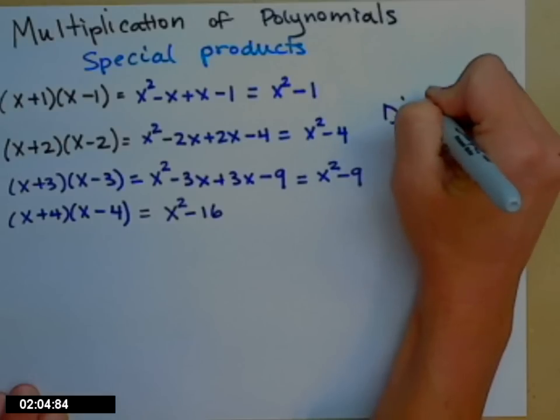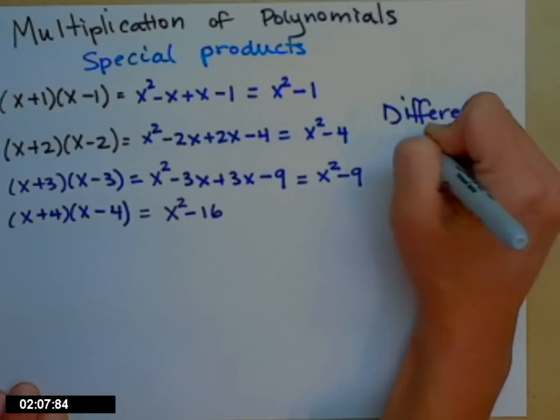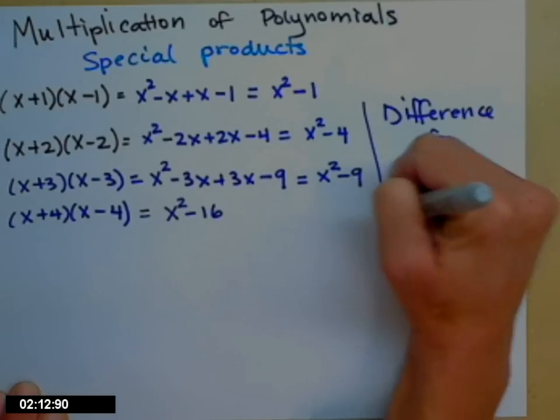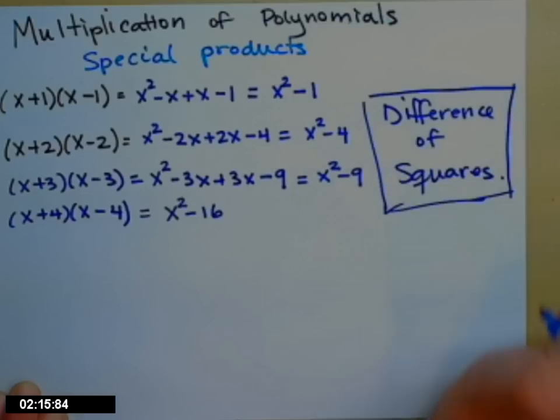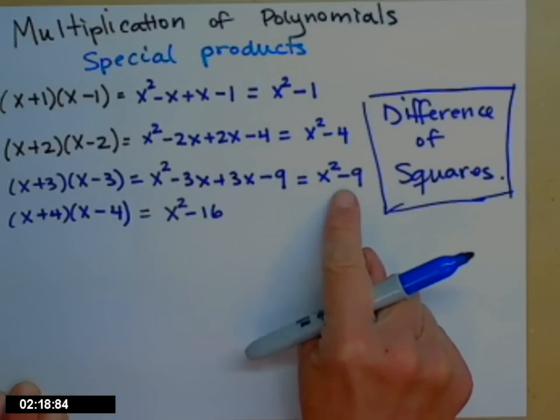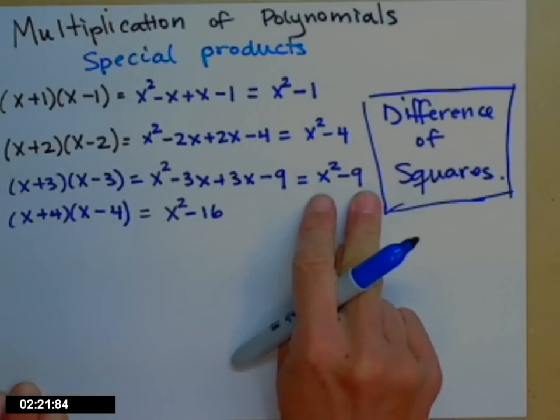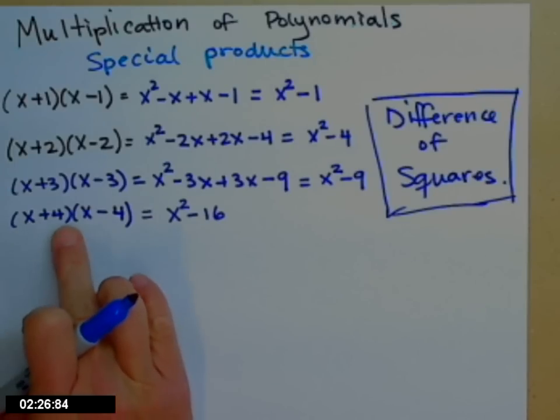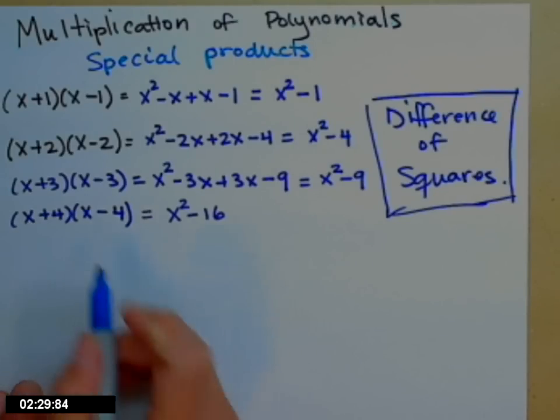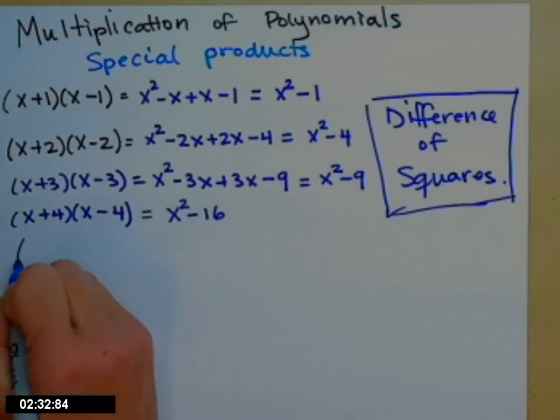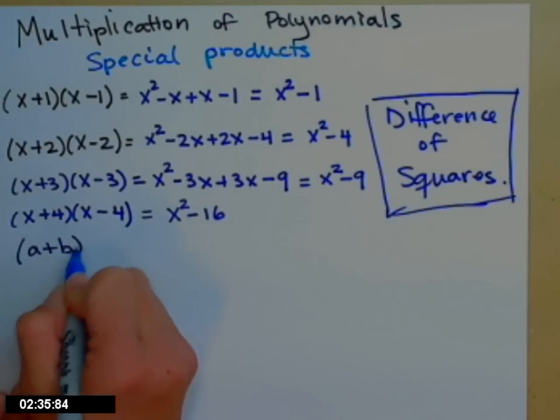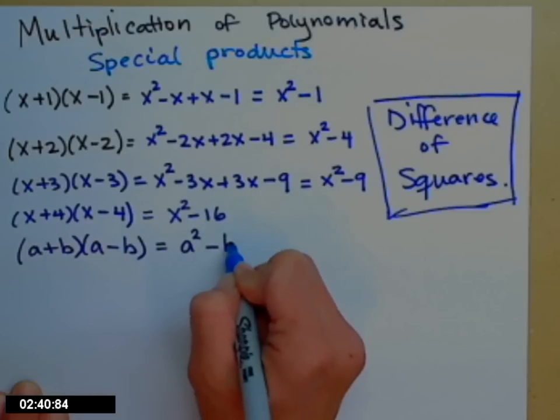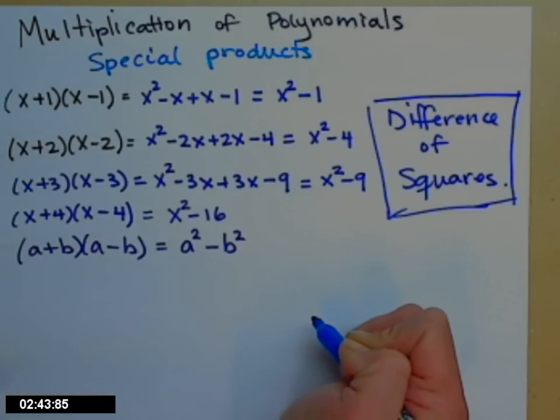This special form is called the difference of squares. When you get to your factoring chapter, this is going to be part of a big section on factoring binomials. So the result, difference is the subtraction sign, and squares, both of those are nice perfect squares. Look what happened that went in. I have an x plus a number and an x minus the same number. That's the pattern you're looking for. In general, if you have a plus b times a minus b, what comes out is a squared minus b squared.